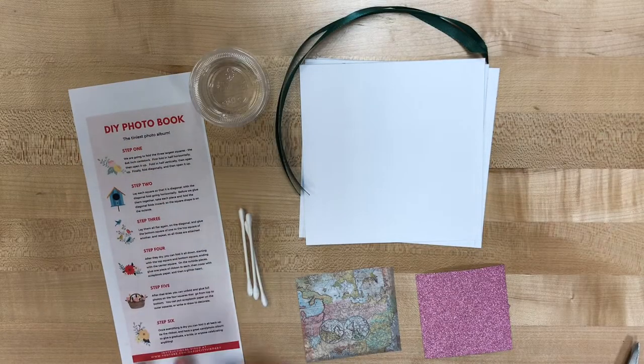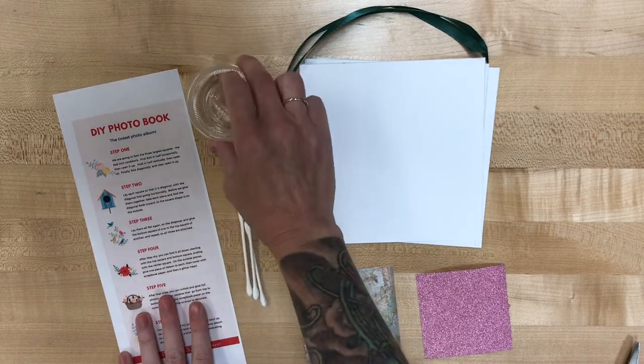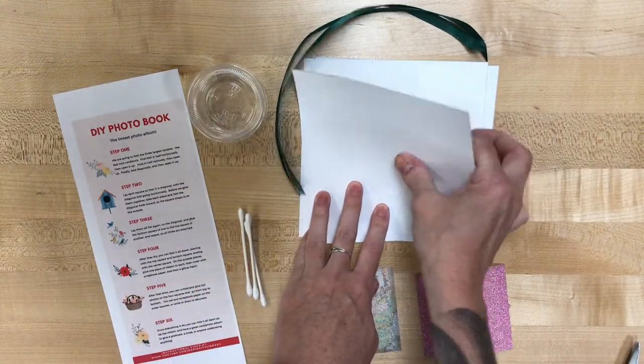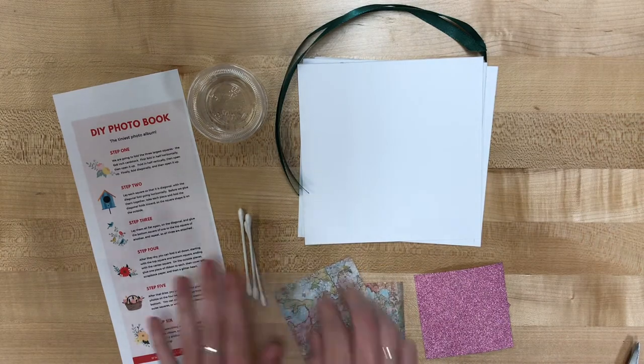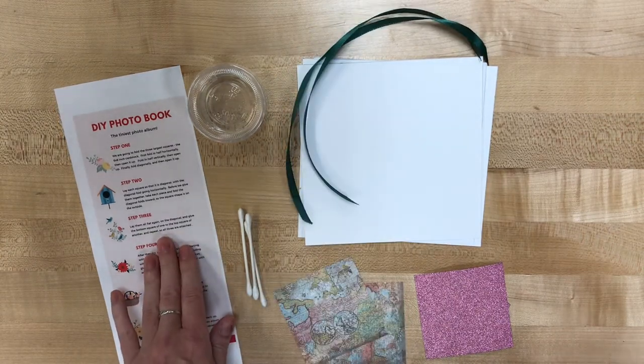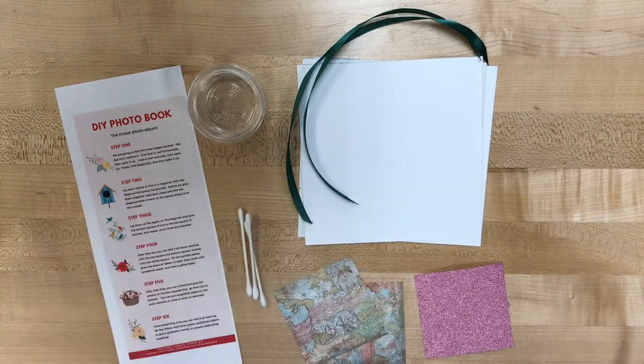Okay, so you should have a set of directions, Q-tips, glue, you should have three cardstock sheets, two glitter sheets, two scrap paper sheets, and two pieces of ribbon. I also have a pair of scissors because we're gonna be needing those too.